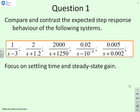Question 1: compare and contrast the expected step response behaviour of the following systems. You've got five systems, all first order, and we want you to look in particular at how the settling time and the steady state gain vary for these five systems. Now's the time to pause before I go on with the solution.